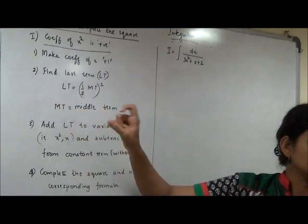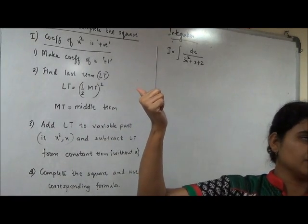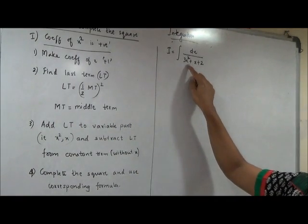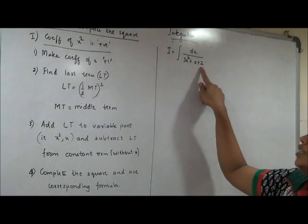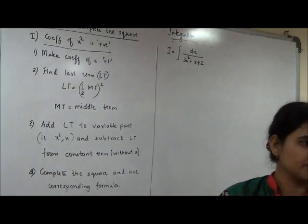Once the last term is ready, this last term has to be introduced in the quadratic. How it's introduced is, the variable part which is there, to it, you add the last term and the constant term which is there without x. From that you subtract the last term.